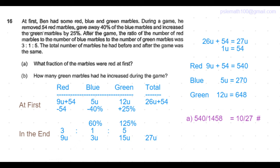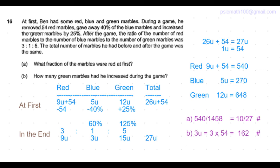Part B of the question is how many green marbles had he increased during the game? At first he had 12 units, he increased it to 15 units. So the increase is 3 units. That equals 3 times 54 equals 162 marbles. So that's the answer to part B of the question.